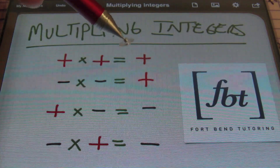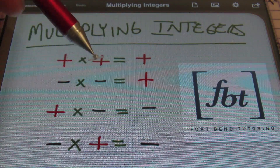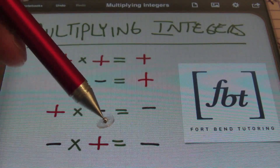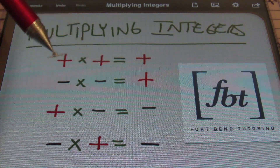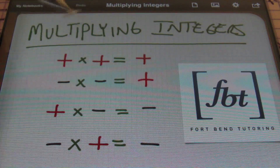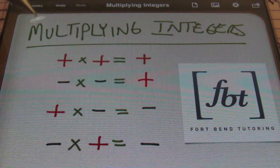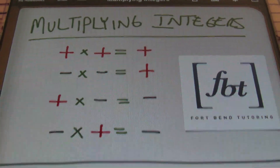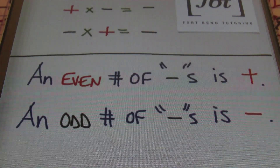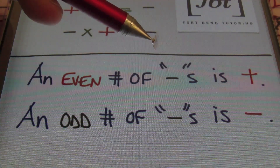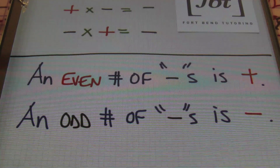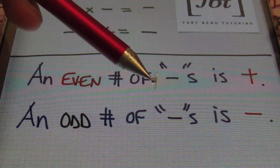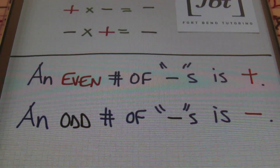A positive times a positive gives you a positive result. A negative times a negative gives you a positive result. A positive times a negative is a negative result. And a negative times a positive is a negative result. In other words, like signs when multiplying together will give you a positive result, and unlike signs will give you a negative result. An even number of negative signs when multiplying will always give you a positive result — every single time. An odd number of negative signs when multiplying values will always give you a negative result — every single time.